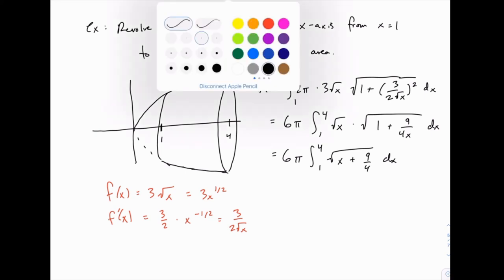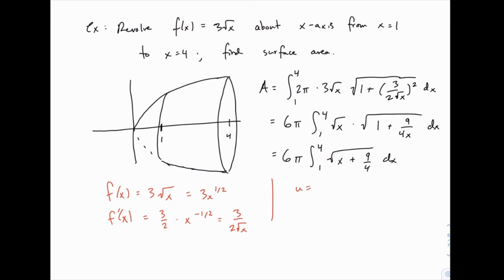We can do a quick u substitution, u equals x plus 9 over 4, du just equals dx. Then the integral of the square root of u du would be 2/3 u to the 3/2.